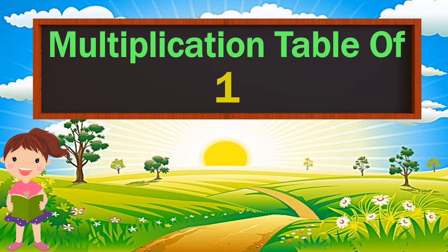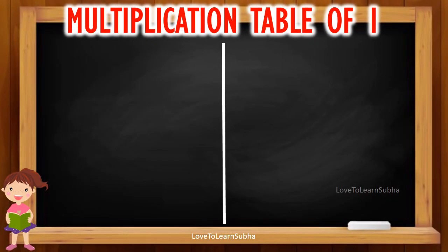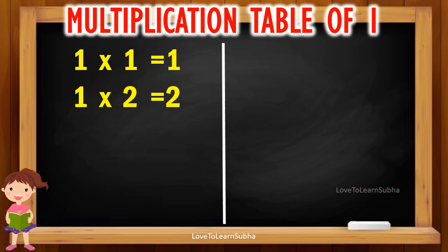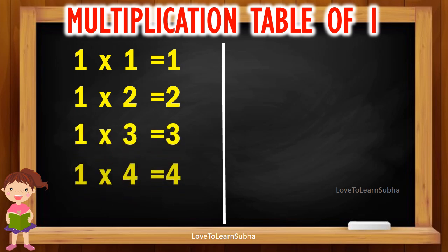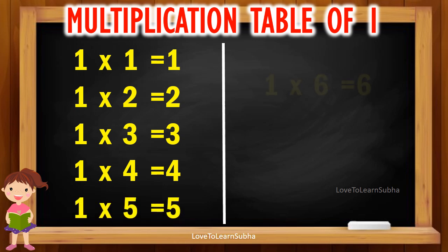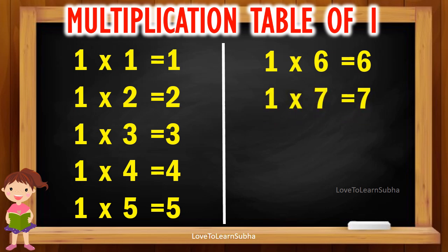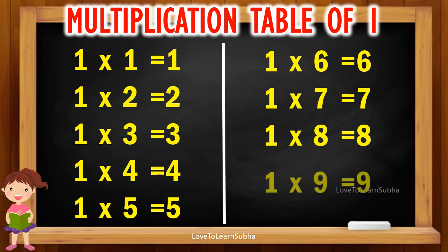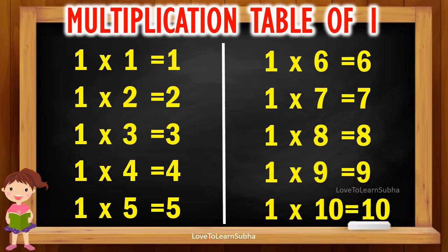Multiplication table of 1. 1 1s are 1, 1 2s are 2, 1 3s are 3, 1 4s are 4, 1 5s are 5, 1 6s are 6, 1 7s are 7, 1 8s are 8, 1 9s are 9, 1 10s are 10.